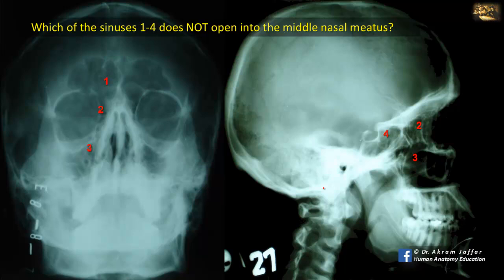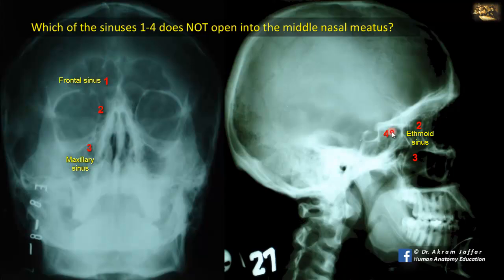Which of the sinuses 1 to 4 does not open into the middle nasal meatus? First, we have to identify the four pairs of paranasal sinuses. One is the frontal sinus, located within the frontal bone and extending into the roof of the orbit. Two are the ethmoid air cells, located between the nose and the orbit. Three is the maxillary sinus, seen in both lateral and frontal views. And four is the sphenoid sinus, located in the body of the sphenoid bone, shown in the lateral view with the sella turcica above it.